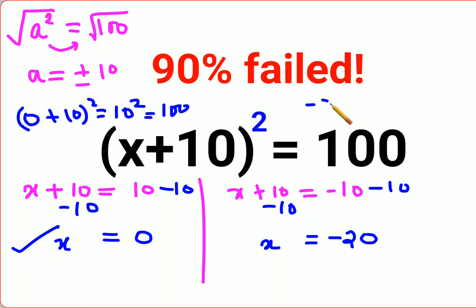Now let's put minus 20 plus 10, the whole squared. That gets you minus 10, the whole squared. Now square of a negative number is always positive, which is 100. So we can say x equals minus 20 is also correct.